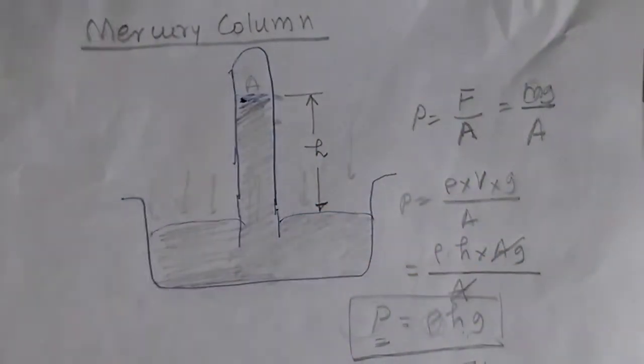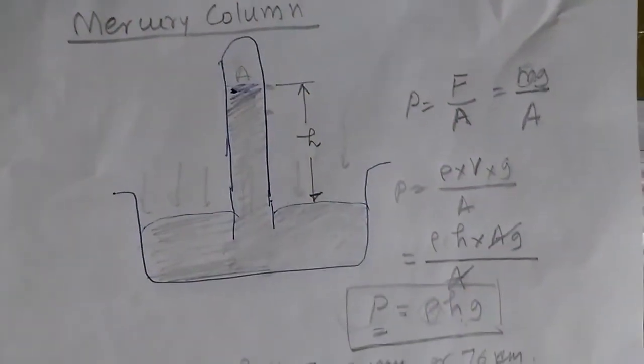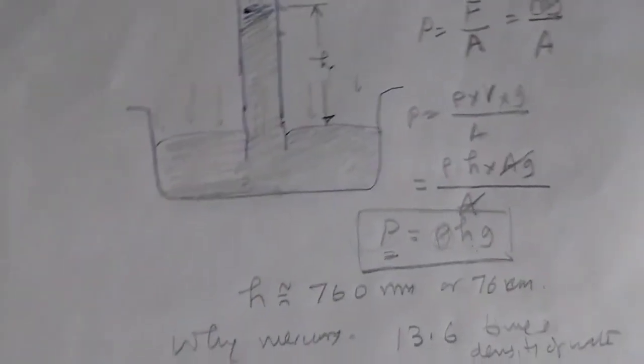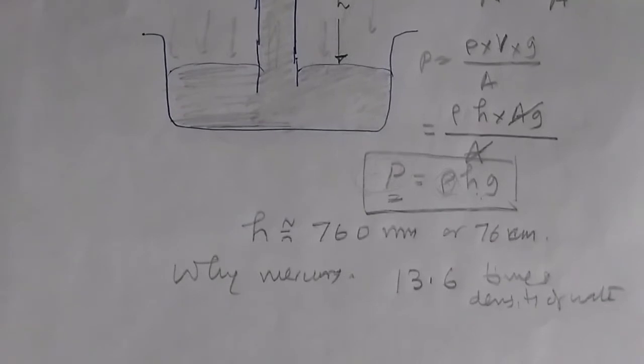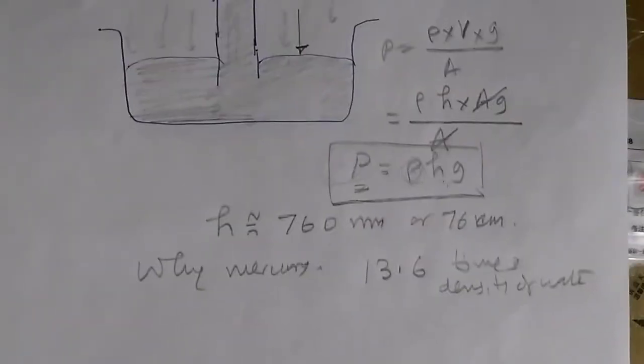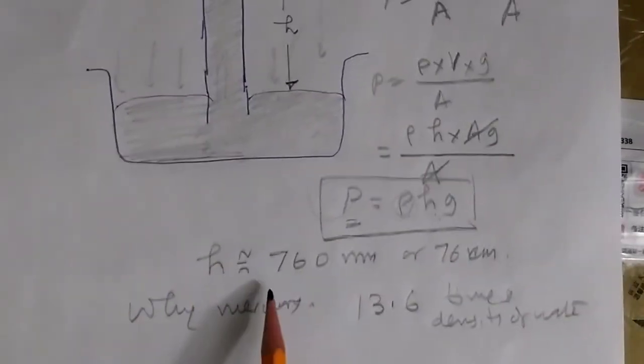It also has to be liquid so that it can flow. These are the properties that make mercury very suitable for a pressure column.